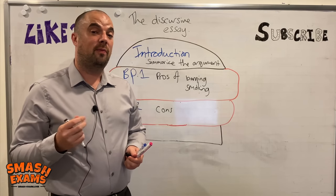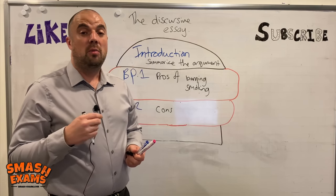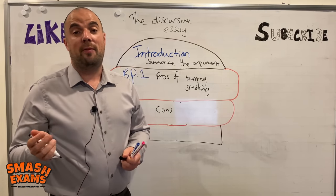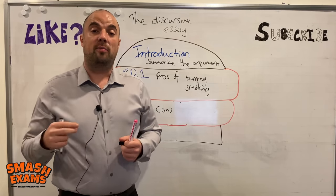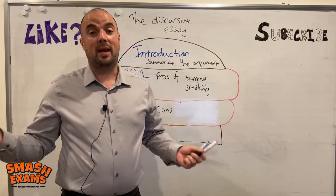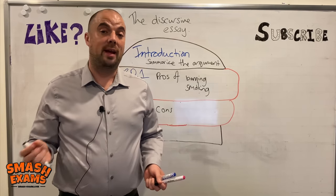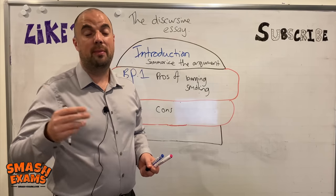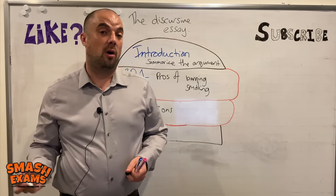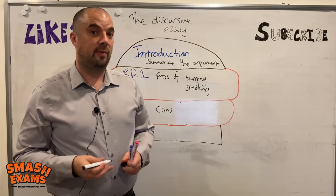For example, a compromise could be that smoking should be banned for anybody under the age of 25, or that smoking is allowed but people cannot access free healthcare if they smoke, or that smokers must pay higher insurance premiums.